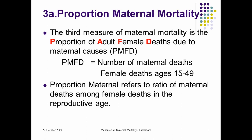The third measure of maternal mortality is the proportion of adult female deaths due to maternal cause. This is derived as the number of maternal deaths divided by female deaths in the age group 15 to 49. Whereas the maternal mortality rate uses the number of females in the age group 15 to 49 as the denominator, proportional mortality refers to the ratio of maternal deaths among female deaths in the reproductive age, with the denominator adjusted to female deaths in the age group 15 to 49.